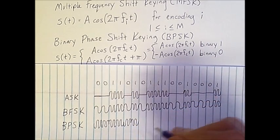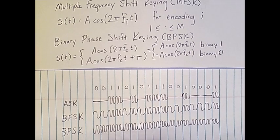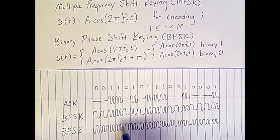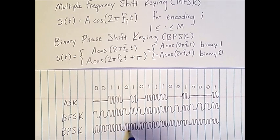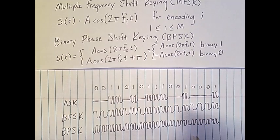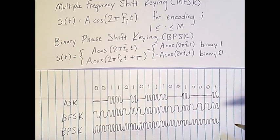Continuing this process, we get the final result. Whenever we switch from a 0 to a 1, there is a direction change in the wave — a sharp change on the upward end. And whenever we go from a 1 to a 0, there is a similar sharp change on the bottom end. Whenever there's no direction change for a long period, that is a sequence of the same element. These three encoding schemes represent three straightforward means of encoding digital data with analog signals, taking advantage of the primary features of a periodic wave: we can modify the amplitude, frequency, or the phase.